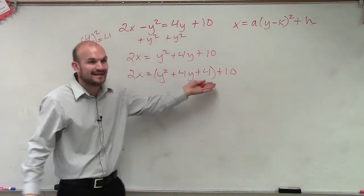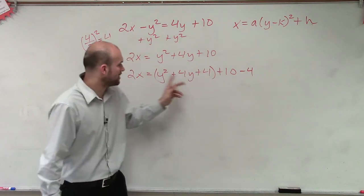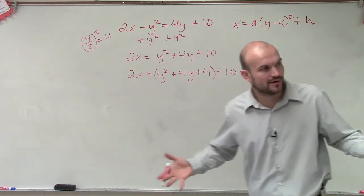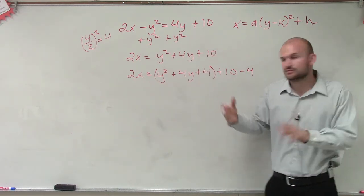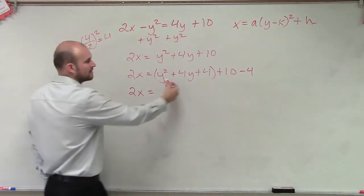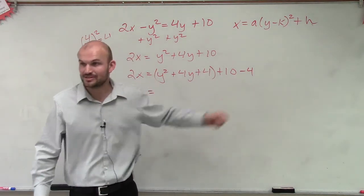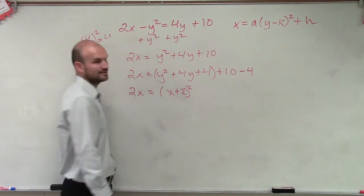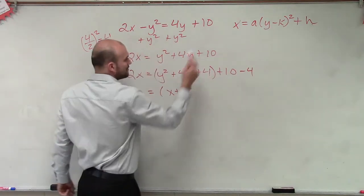Now, since we added a 4 on the right side, we have to make sure we subtract a 4. That 4 is not being multiplied by anything else, so we just leave it as the minus 4. So now, the whole purpose of completing the square is we created a perfect square trinomial that we can now rewrite as a binomial squared. So now I write 2x equals — well, how do you write this as a binomial squared? You factor it. What two numbers multiply to give you 4, add to give you 4? y plus 2 times y plus 2, which is y plus 2 squared. And 10 minus 4 is 6.